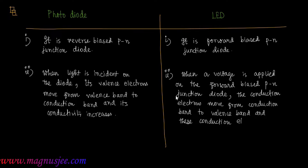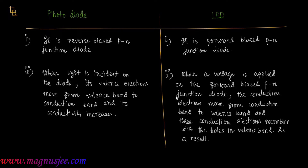These conduction electrons recombine with the holes in the valence band, and as a result, light is emitted — because electrons are travelling from a higher energy level to a lower energy level — from the junction of the diode.